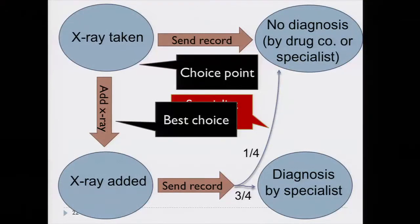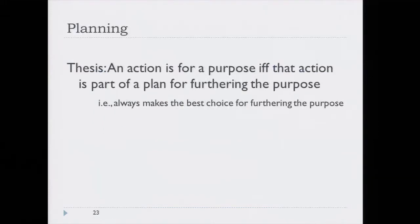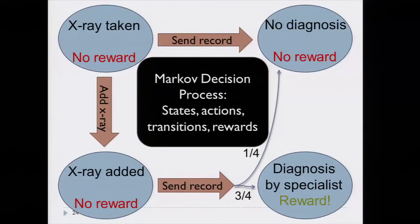We can capture intention by saying that at every choice point the agent makes the best choice for achieving that purpose. The best choice is not guaranteed to ensure that the purpose will be achieved, but that's the best one could hope for. This leads to our thesis: an action is for a purpose if and only if that action is part of a plan for furthering that purpose, where at every choice point the agent makes the best possible choice. This is more than a play on words because planning has been well studied in computer science and we can leverage existing technology to scale up to large systems.